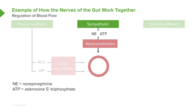The sympathetic nervous system does the opposite with two different neurotransmitters. It does it through norepinephrine and ATP, both causing vasoconstriction or decreasing the luminal diameter of the blood vessels.